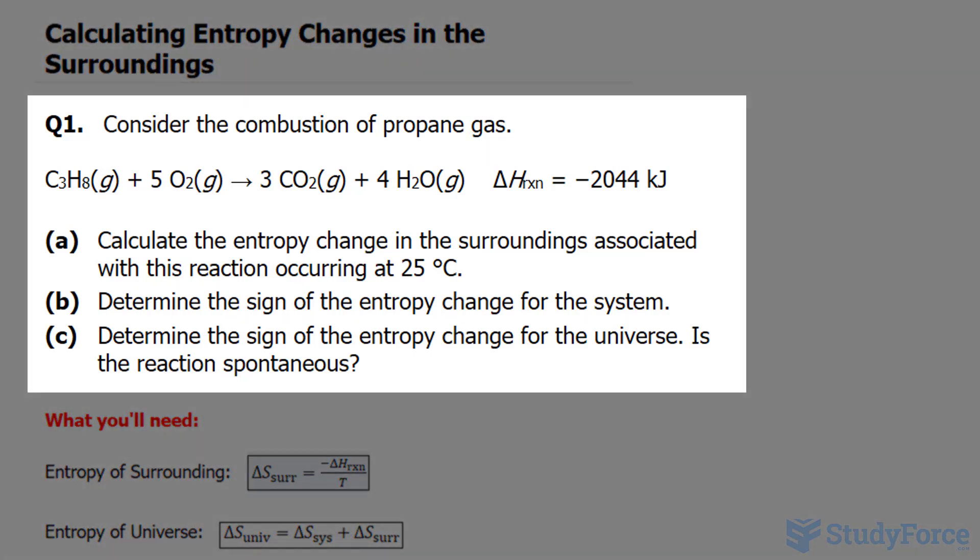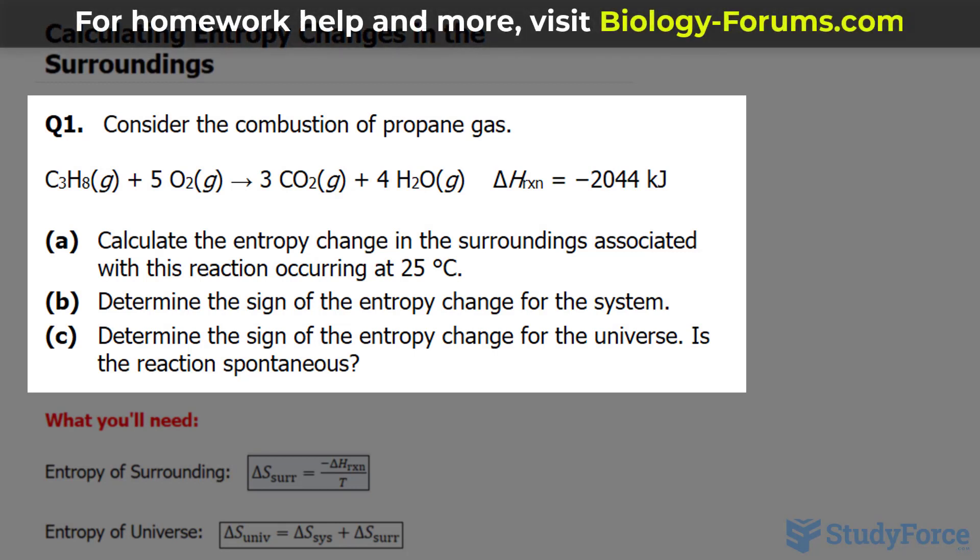The first question reads, consider the combustion of propane gas. The chemical equation for this is shown underneath. And as you can see, it has a delta H, or a change in enthalpy, of negative 2044 kJ.